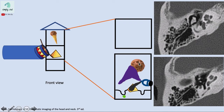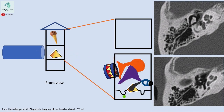The malleus articulates with the tympanic membrane via its handle — the manubrium. So the pathway is: tympanic membrane to malleus, malleus to incus via the incudomalleolar joint, then incus to stapes via the incudostapedial joint.